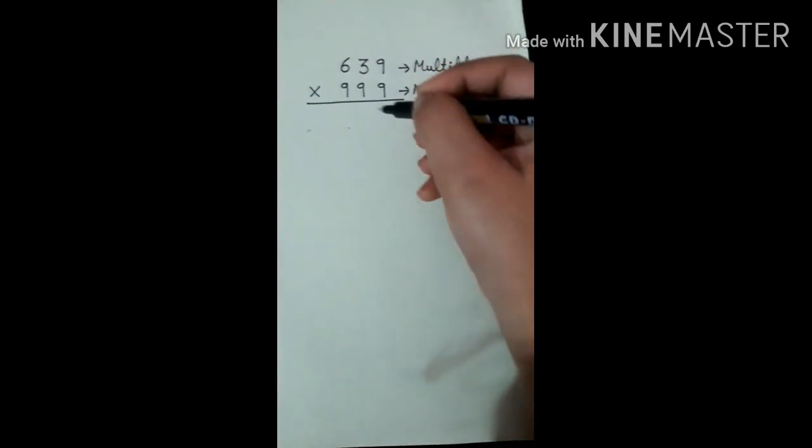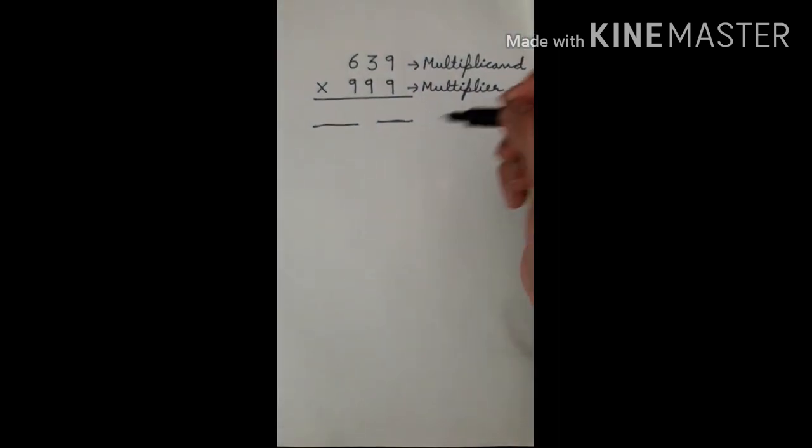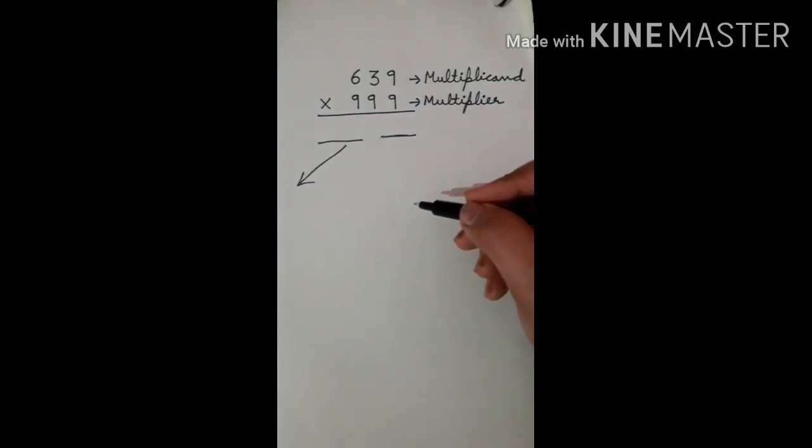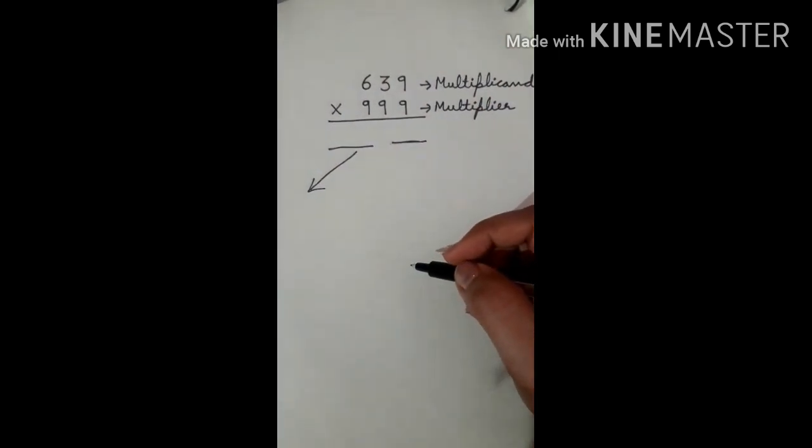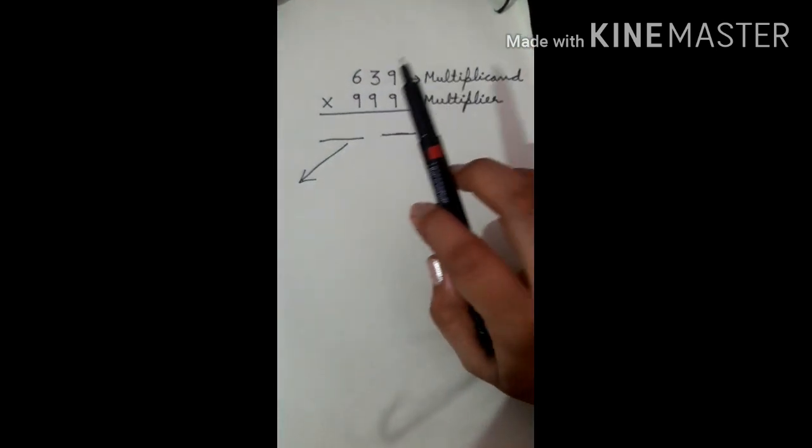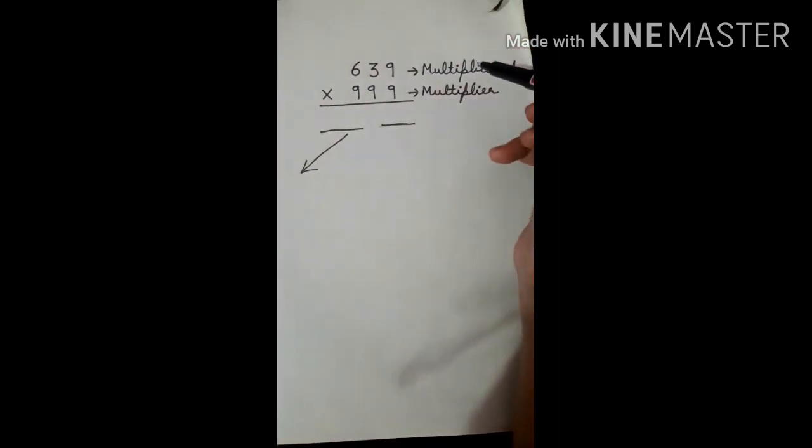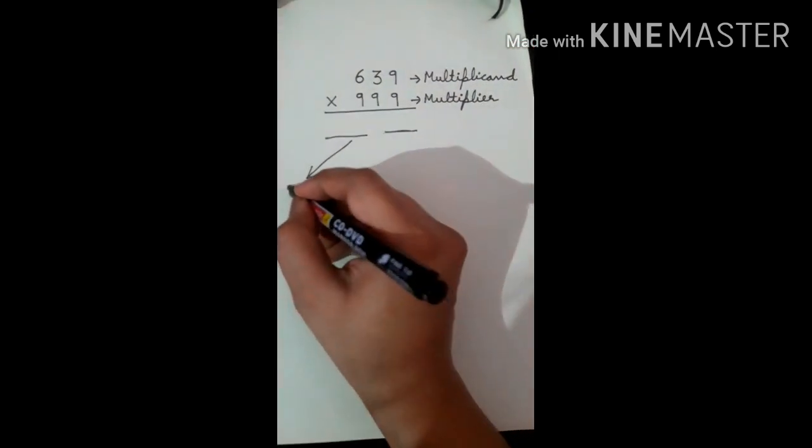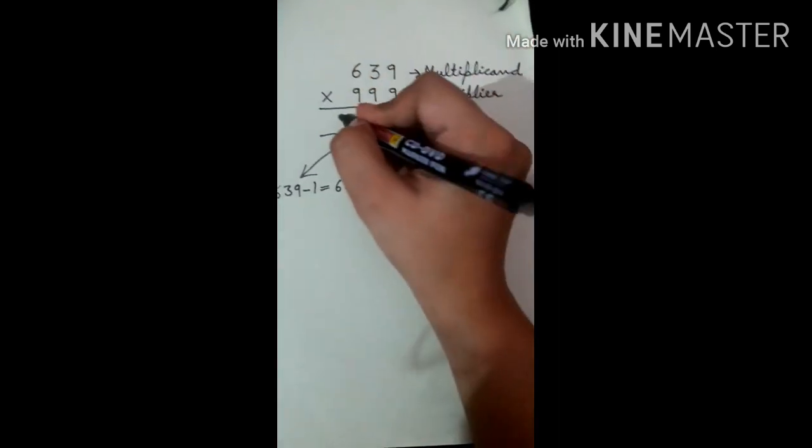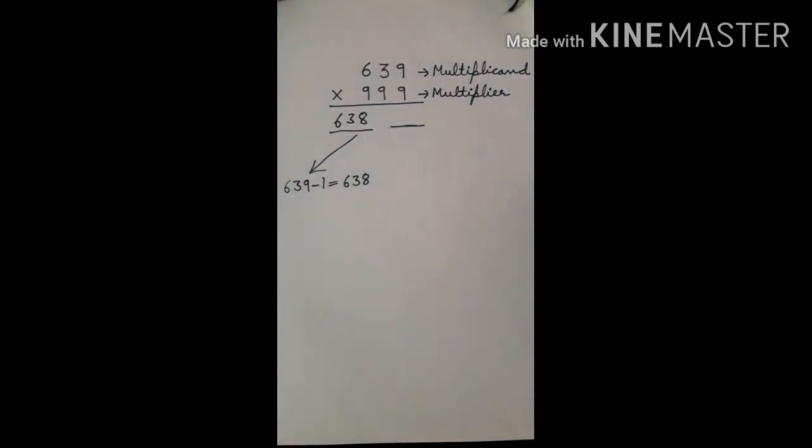Secondly, the multiplier should have all digits 9. See, all the digits are 9, so this trick is applicable in this number. We will start. First, we will make the first part and then the second part. For making the first part, the first method is Ekayunena Purvena, which means by 1 less than the 1 before. You will take 639 and minus 1 from it. The answer is 638. So your first part is 638.